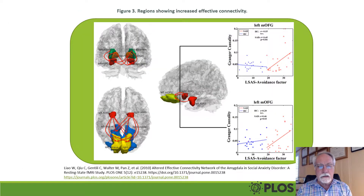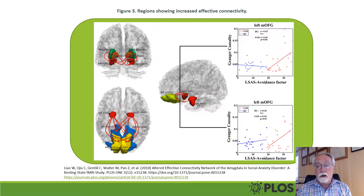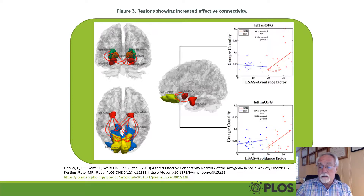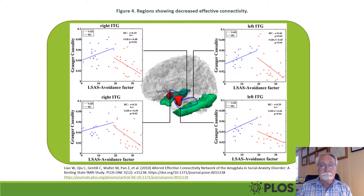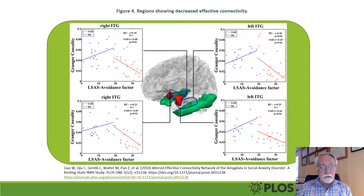There's an interesting study where they were able to use the Liebowitz Social Anxiety Scale and correlate it to connectivity with these particular brain regions. You can actually demonstrate that, and the results were different between the left amygdala and the right amygdala.